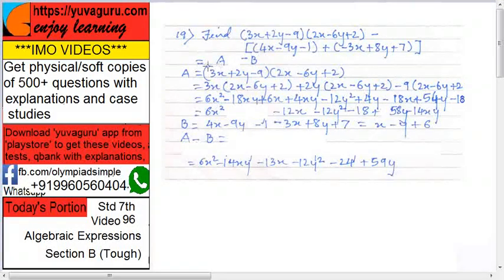So, 3x into 2x minus 6y plus 2, plus 2y into 2x minus 6y plus 2, plus minus 9 into 2x minus 6y plus 2. Got this first step, now second step, solve each bracket.